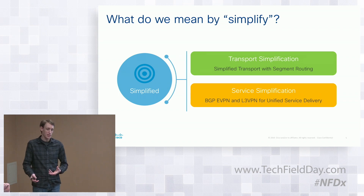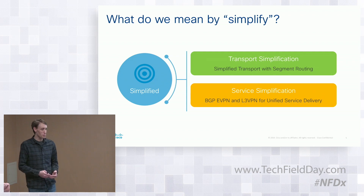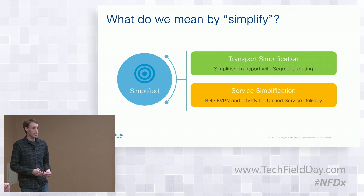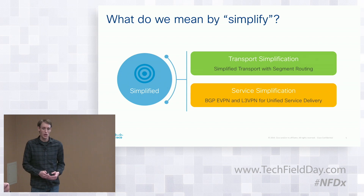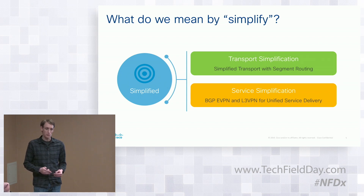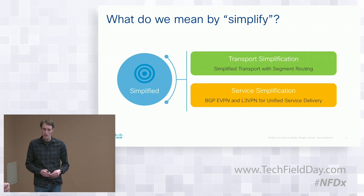One question not addressed is whether EVPN will replace layer three VPN at some point — are we going to do everything with EVPN? The Cisco stance is no. Layer three VPN is very good at what it has been doing for the last 12 or so years, and it'll continue to be that.